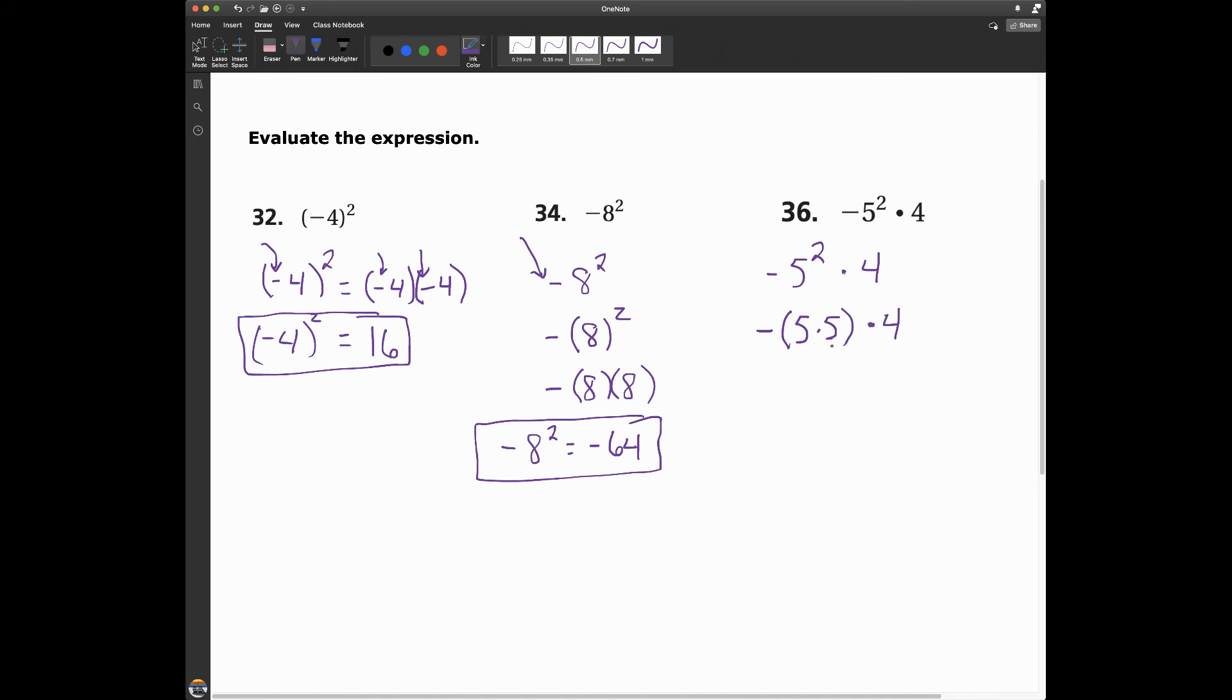Inside the parentheses, I use PEMDAS. I do parentheses first. So this is negative 5 times 5 is negative 25 times 4. Different signs means that I have a negative answer. So negative 5 squared times 4 equals negative 100.